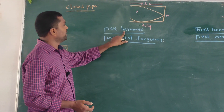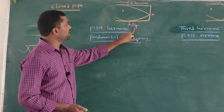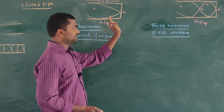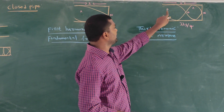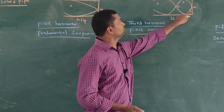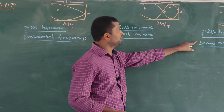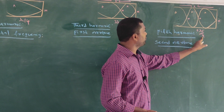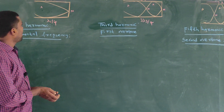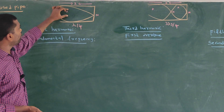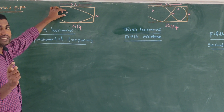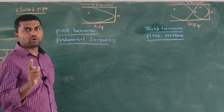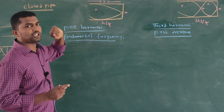We can observe the frequencies — the harmonics — of the closed pipe. For the first harmonic, the length L is equal to λ₁/4, and it contains one antinode and one node. The third harmonic contains two antinodes and two nodes. The fifth harmonic has L equal to 3λ₃/4, and then L is equal to 5λ₅/4. The open end always has an antinode and the closed end always has a node.